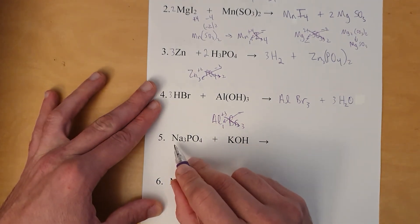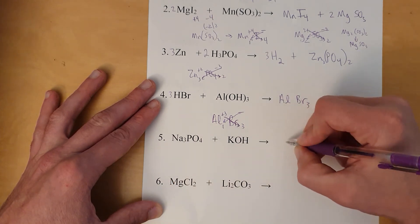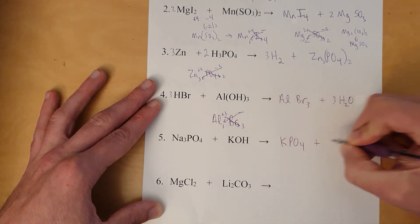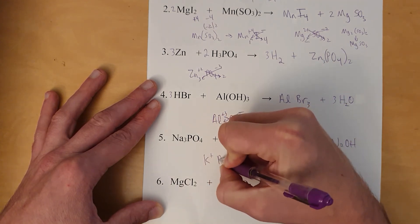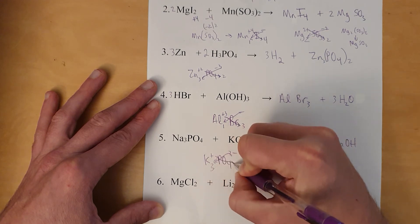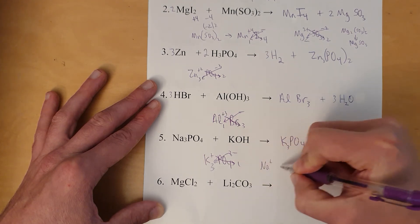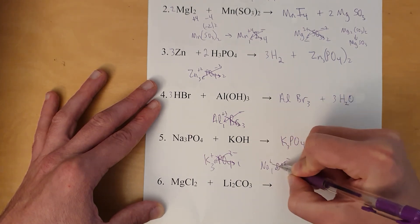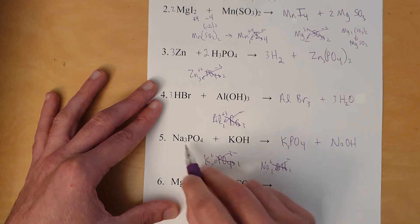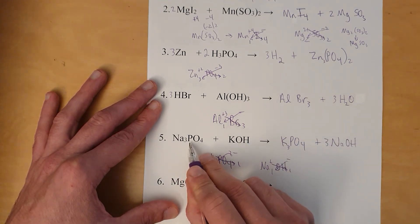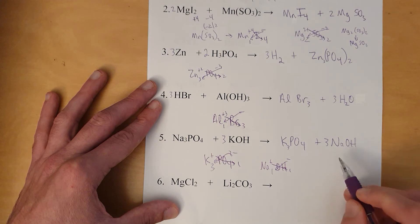Next: sodium phosphate and potassium hydroxide. Sodium goes with hydroxide; potassium goes with phosphate — giving potassium phosphate and sodium hydroxide. Potassium is +1 and phosphate is −3, so you get three potassiums and one phosphate: K₃PO₄. Sodium is +1 and hydroxide is −1: one sodium, one hydroxide — NaOH. Balance: three sodiums, three sodiums; one phosphate, one phosphate; three potassium, three potassium; three hydroxide, three hydroxide. Done.